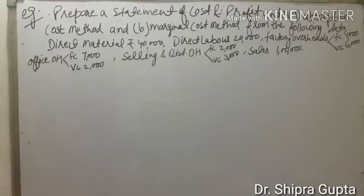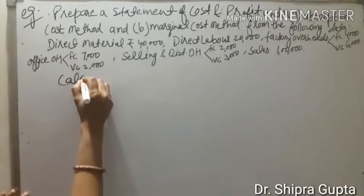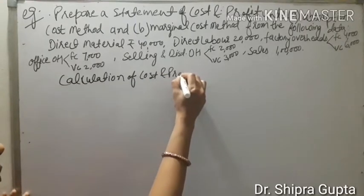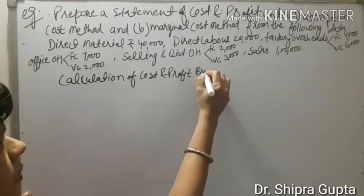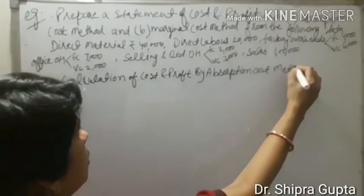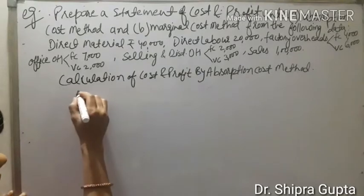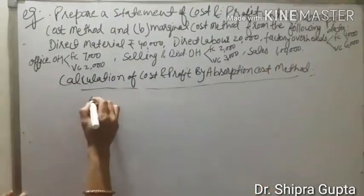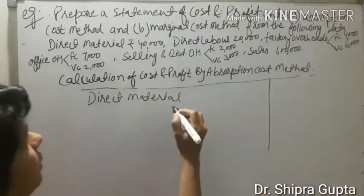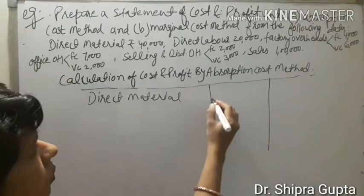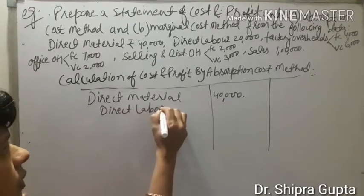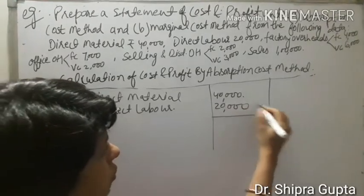First we will apply the absorption method — calculation of cost and profit by absorption cost method. In this method, first we take direct material Rs. 40,000 and direct labor Rs. 20,000, and their total is Rs. 60,000.